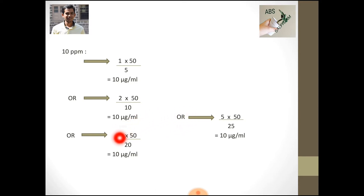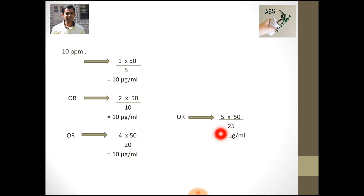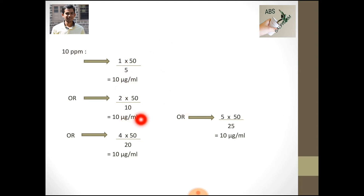Since a 4 ml pipette is also difficult to find at college level, another option is to pipette 5 ml and dilute to 25 ml, which also gives 10 micrograms per ml. These are various ways to achieve the same dilution depending on the availability of glassware, and we can adjust the formula accordingly.